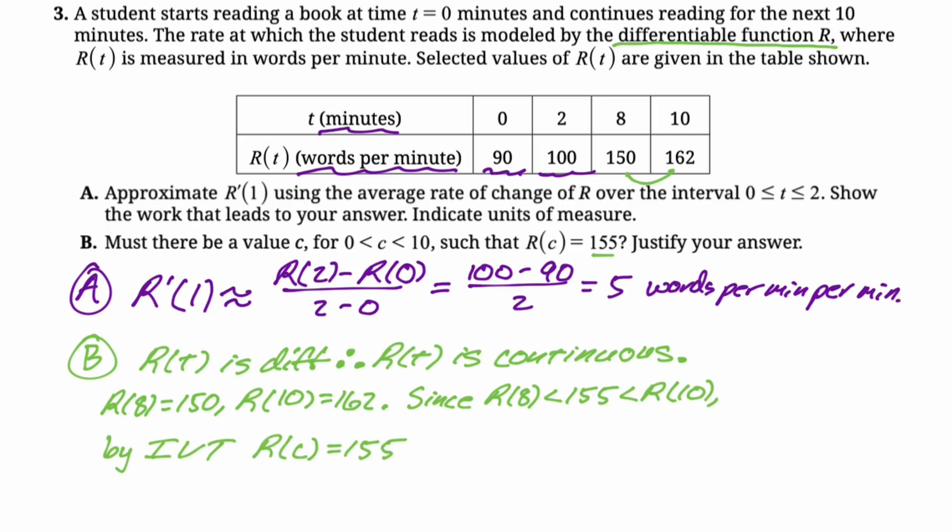By IVT, we know that r of c equals 155. Then we have to finish. So we'll say for some c, and now what we did was we showed that it's between 8 and 10. So for some c between 8 and 10.